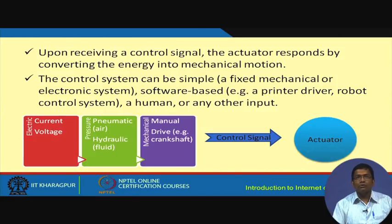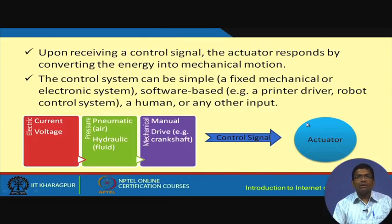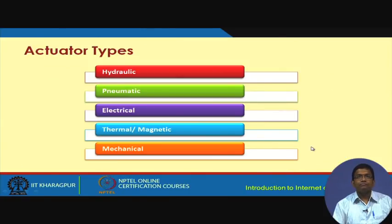There are three broad types of actuators: electric-based, pressure-based, and mechanical-based actuators. Each sends control signals based on which actuation is performed. More specifically, we have hydraulic actuators, pneumatic actuators, electrical actuators, thermal actuators, and magnetic actuators.